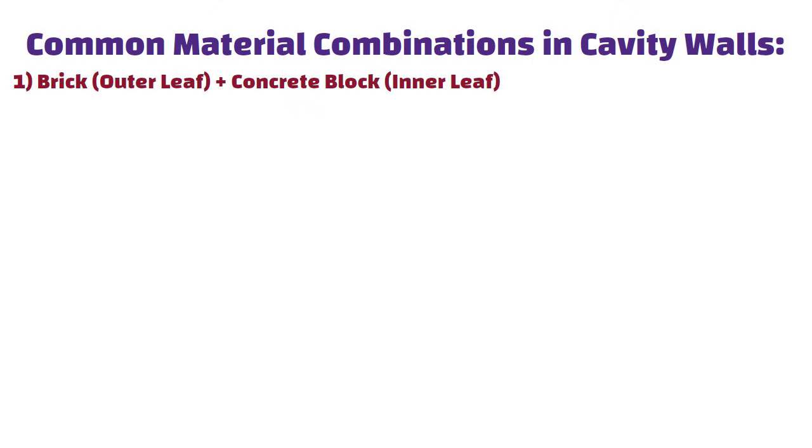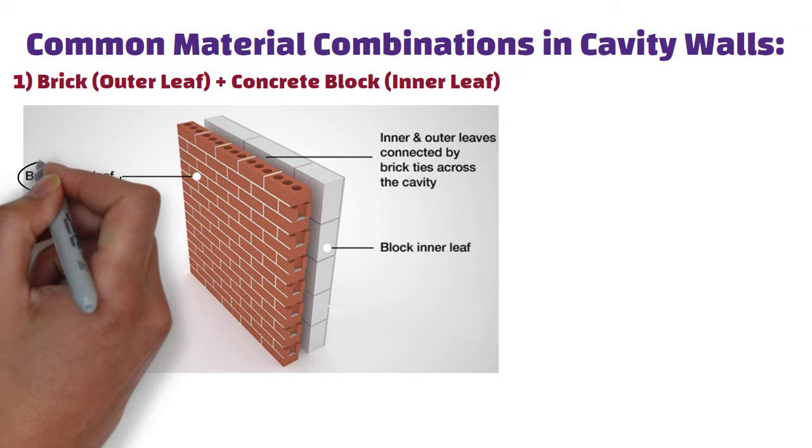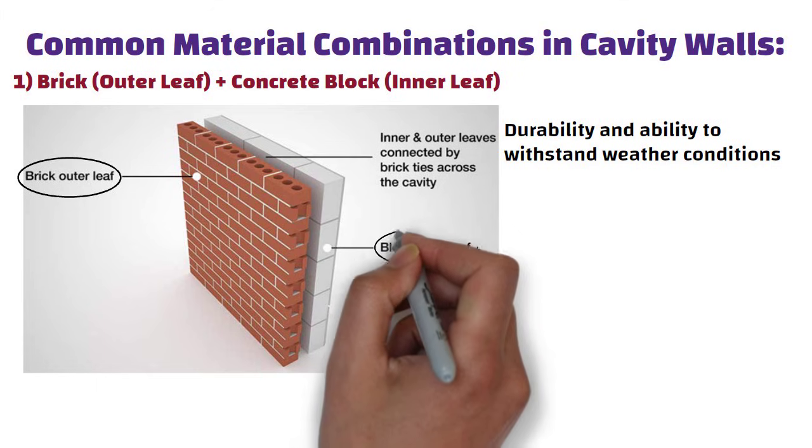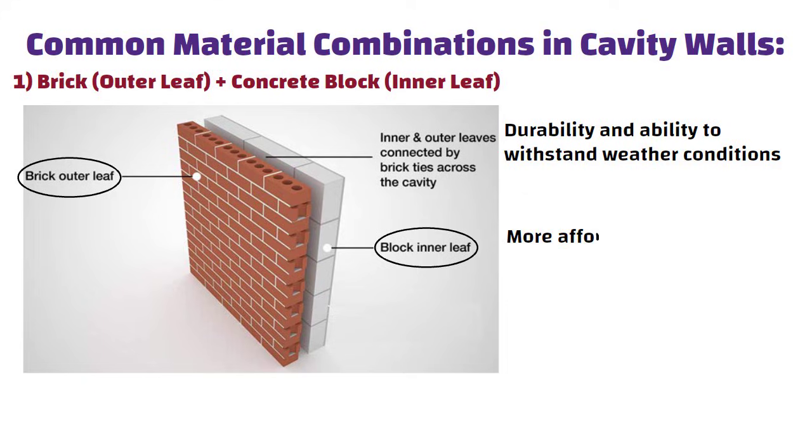Common material combinations in cavity walls. Brick plus concrete block: Bricks are often used for the outer leaf due to their durability and ability to withstand weather conditions. Concrete blocks are typically used for the inner leaf as they are more affordable and provide good structural strength.